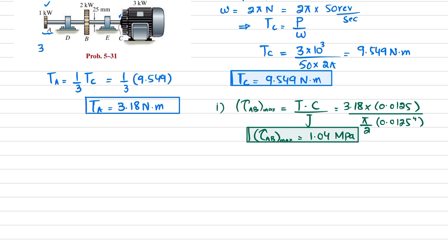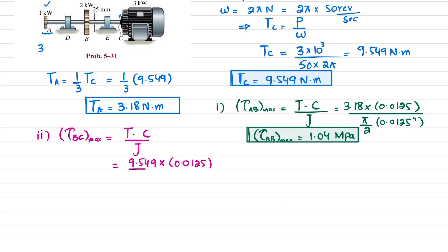For the second part, we find the maximum shear stress in region BC, using the same formula τ = T×c / J. In region BC we take the torque at point C, which is the maximum: T_C = 9.549 N·m. With c = 0.0125 m and J = (π/2)×(0.0125)⁴, calculating gives maximum shear stress in region BC equal to 3.11 megapascals.